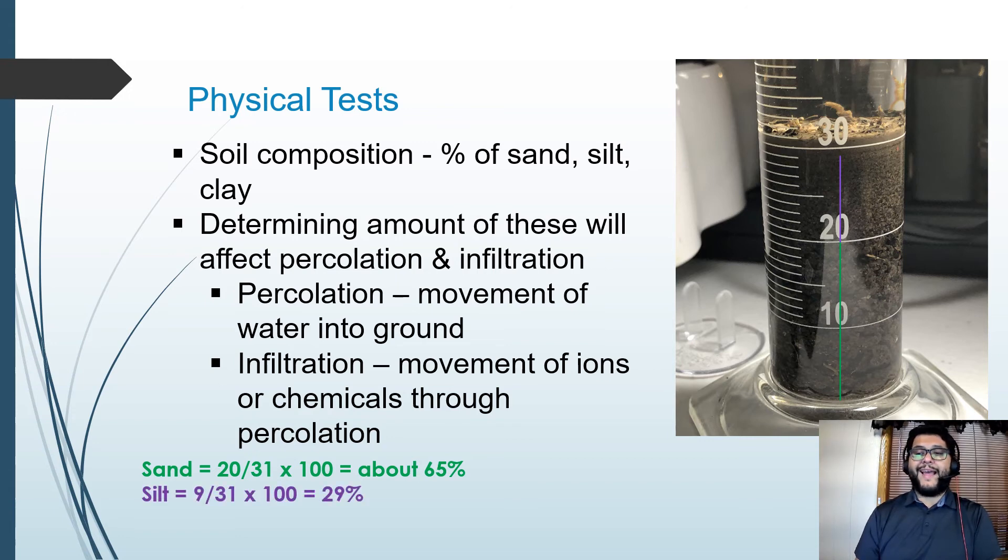Our next one, that purple line, that's going to be our silt. That's going to end up measuring about 9 mls divided by the total, which is 31, and that's going to be about 29 percent roughly. Then our clay is going to be that last small portion of just a couple of milliliters divided by 31, and that's going to give me about 6 percent. Knowing those percentages, I can now use this on a soil triangle to determine what type of soil I have and whether it's going to be good to hold water or it's going to let water pass through pretty quickly or vice versa.